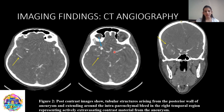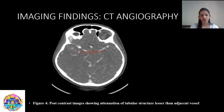If we go back to the plain scan, we see it was not present in the plain brain. We checked the attenuation of the structure which showed attenuation values between 200 to 250, and that of the adjacent arteries like MCA was around 350 to 400. Hence, it was suggested that this is extravasation of contrast, as attenuation values are lesser than that of the adjacent contrast-filled blood vessels.